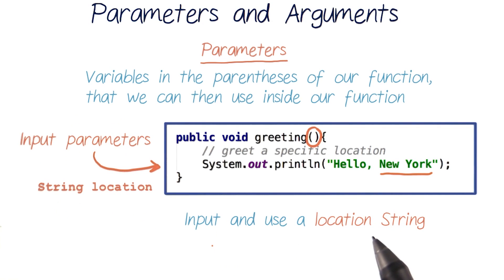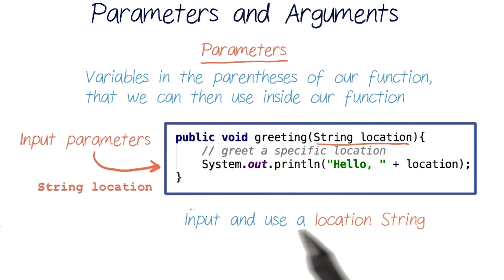For our custom greeting, we'll want to be able to input and use a string variable that tells us our location. To access this string, we'll need to ask for it by including it as a parameter inside these parentheses. And now we can use this variable location inside our function code. This is like when we declared a variable inside our function and could use it.